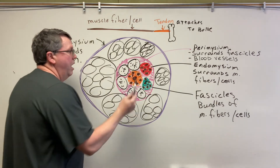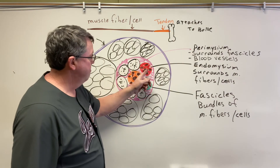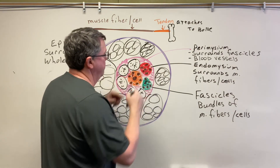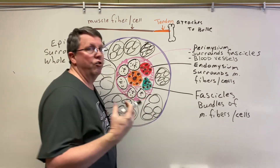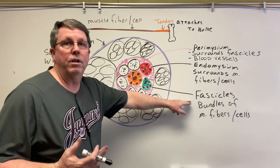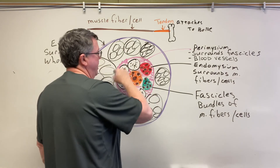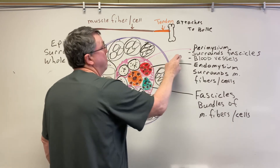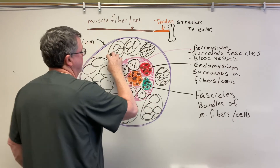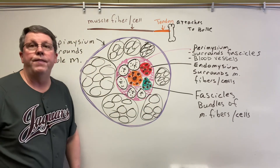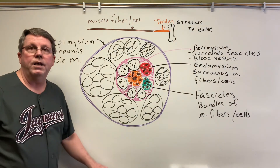Let's look at this one more time. I have my muscle fiber, and my muscle fiber is surrounded by endomysium. The endomysium-surrounded fibers make up a bundle of muscle fibers called a fascicle. A bunch of fascicles are then surrounded by perimysium, which also contains blood vessels. Then the fascicles and perimysium together are surrounded by the epimysium, making up the whole muscle. That's it for the gross anatomy of the muscle.